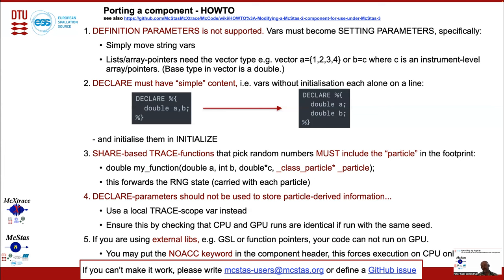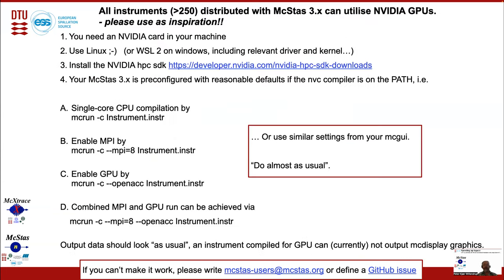External libraries are not directly possible, but we have a workaround called NoACC that forces the given component to run back on the CPU, adding an overhead of transfer between CPU and GPU. All our instruments in McStas 3 can utilize GPUs — please use these as an inspiration. You need an NVIDIA card, the NVIDIA HPC software development kit, and then you may simply use mcrun with the input flag --openacc.